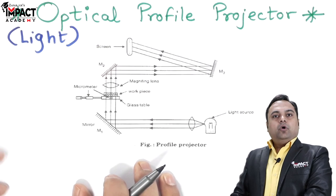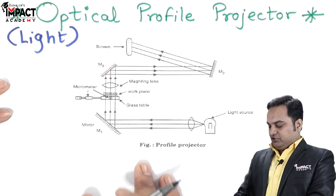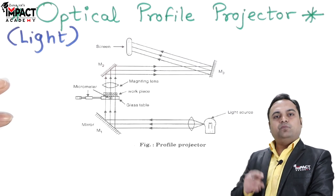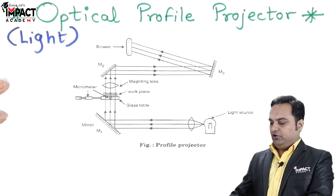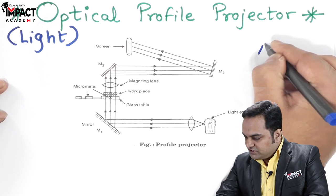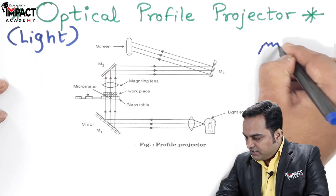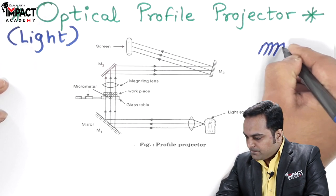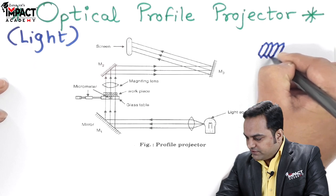We use the optical profile projector to inspect small elements. For example, a screw with very fine threads. I'm showing this as an example.